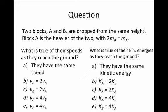If I drop two objects, A and B, and they don't have the same mass—let's say A is heavier by a factor of 2 than B—then what would be true of their speeds as they reach the ground? Well, we know that in the field of gravity, all objects have the same acceleration.